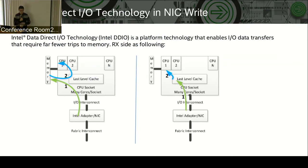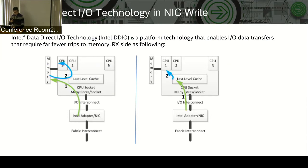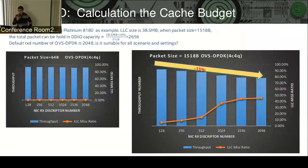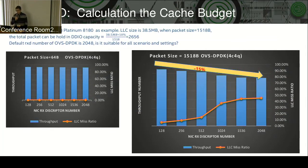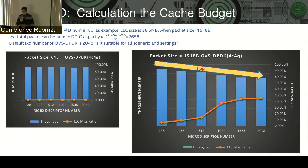One thing to be aware of: in the worst case, the DDIO write-allocate operation can only occupy about 10% of all the last level cache on the socket. Taking the Intel 8180 CPU as an example, we have a total size of 38.5 megabytes last level cache. If the DDIO write-allocation budget is 10%, that is about 3.85 megabytes. If all the packet sizes are 1518 bytes, the maximum number of packets we can buffer in last level cache with DDIO is about 2,600.